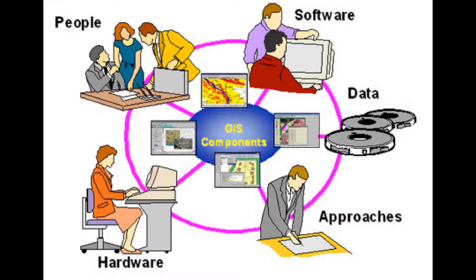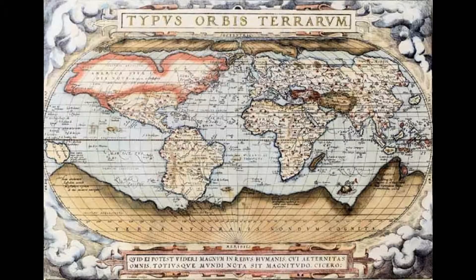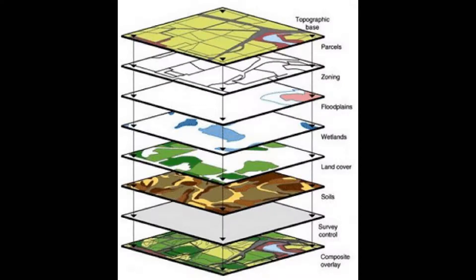GIS stands for Geographic Information System. A geographic information system is a combination of hardware, software, data, and an individual. GIS is frequently seen as synonymous with mapmaking, but mapmaking is obviously not new. While GIS does allow you to make maps, that is really just the tip of its potential. GIS provides tools through which you can capture data, manage, manipulate, analyze, and represent it in a map, graphic, or other report-like form.